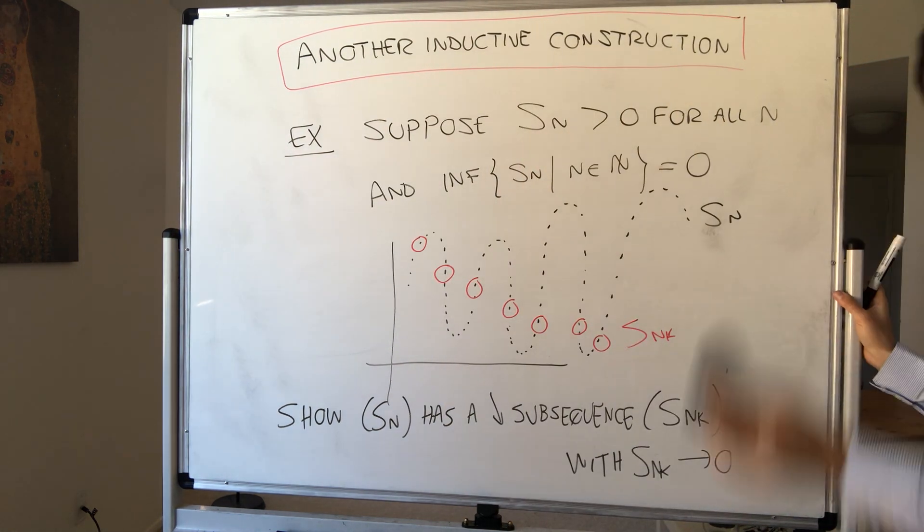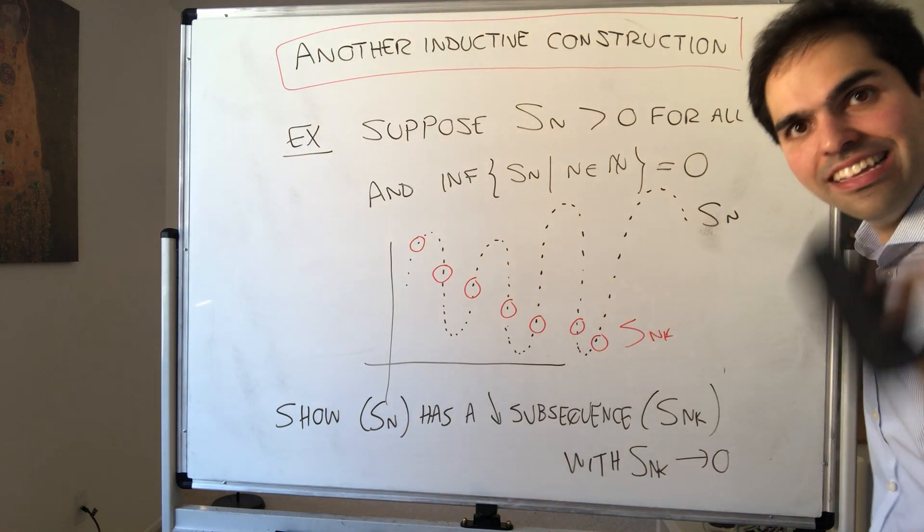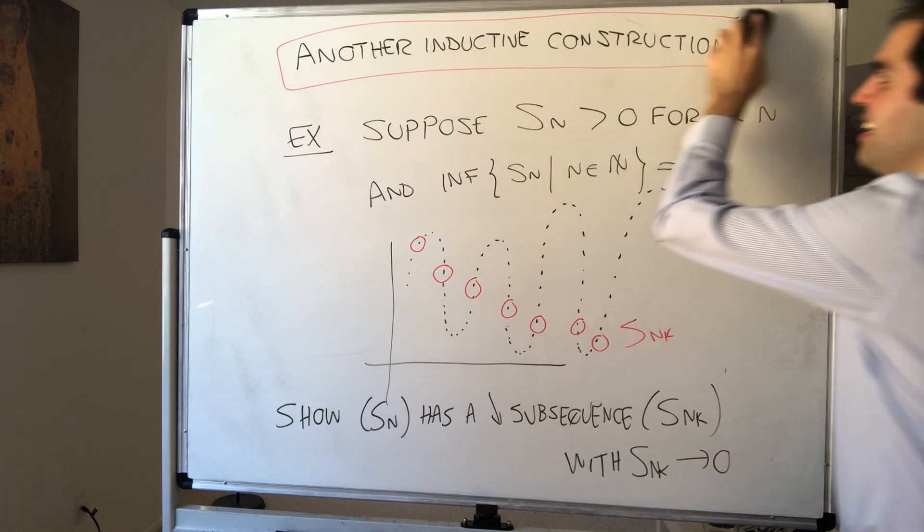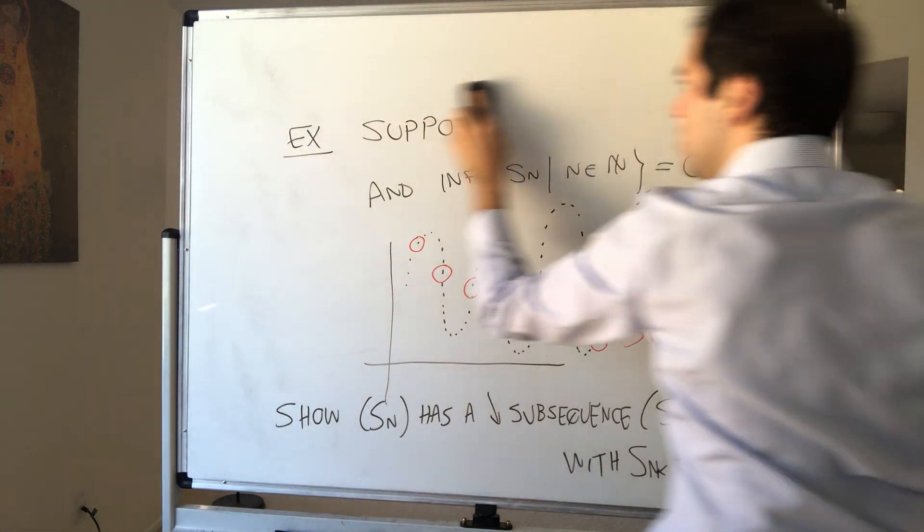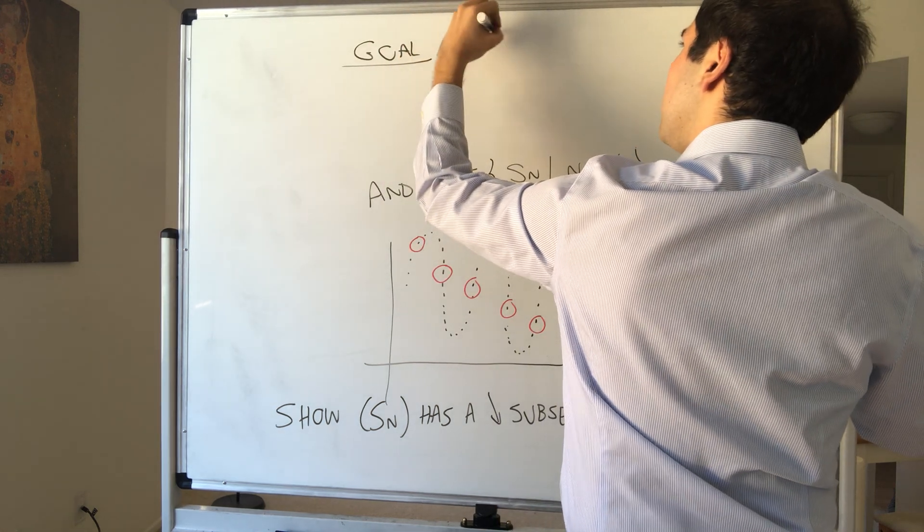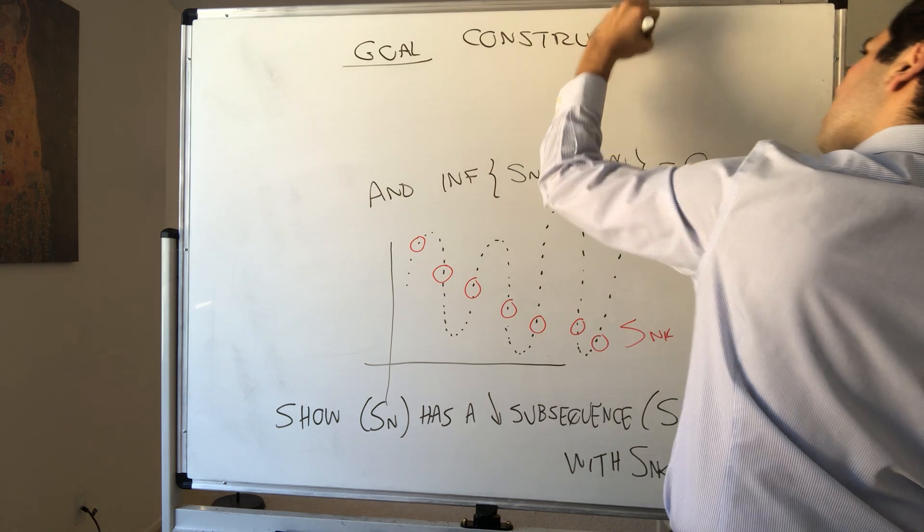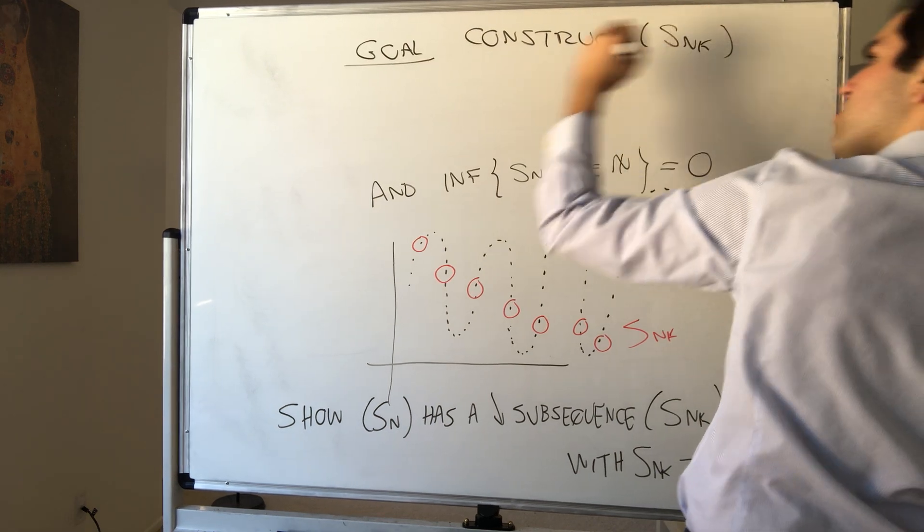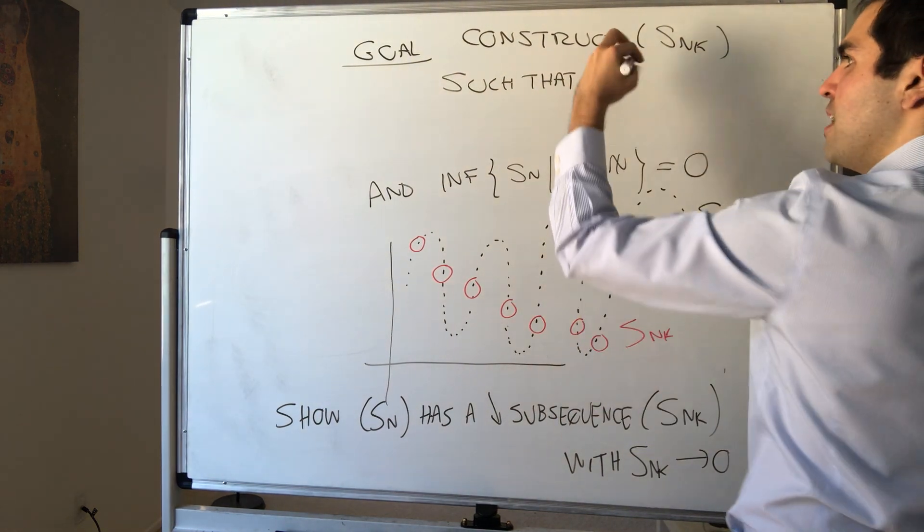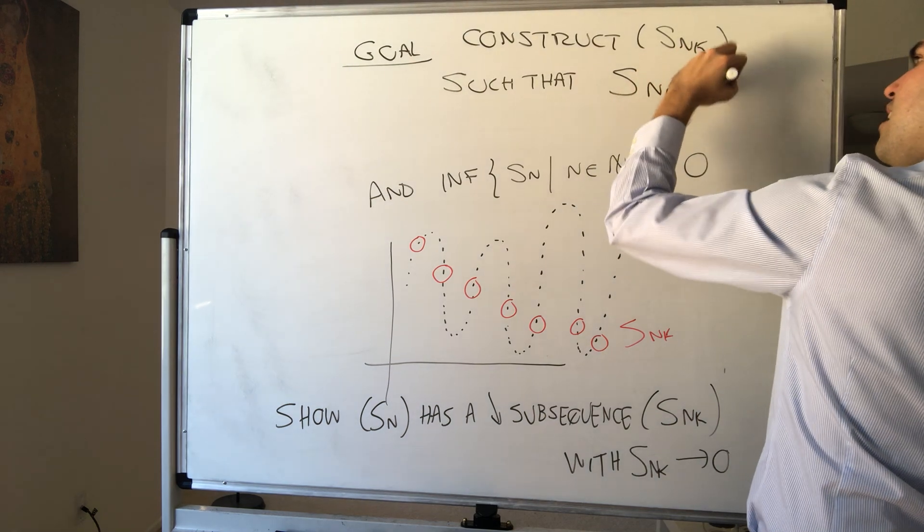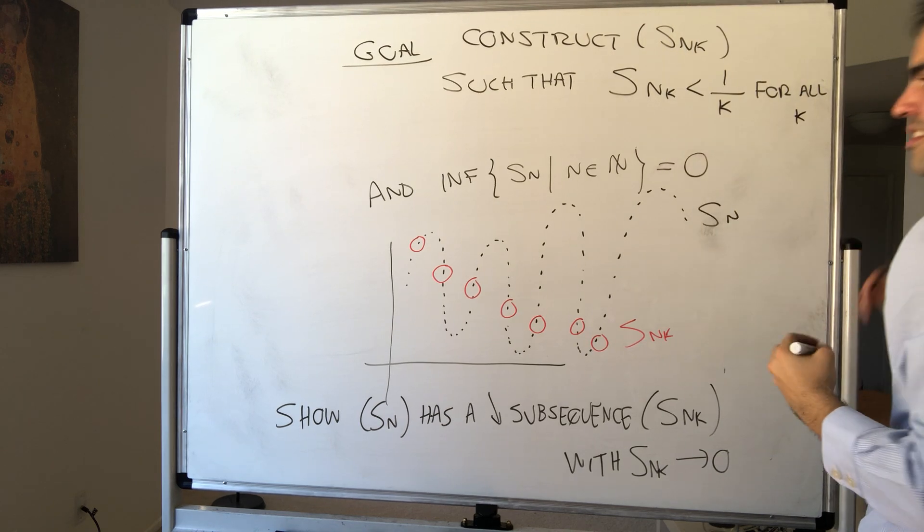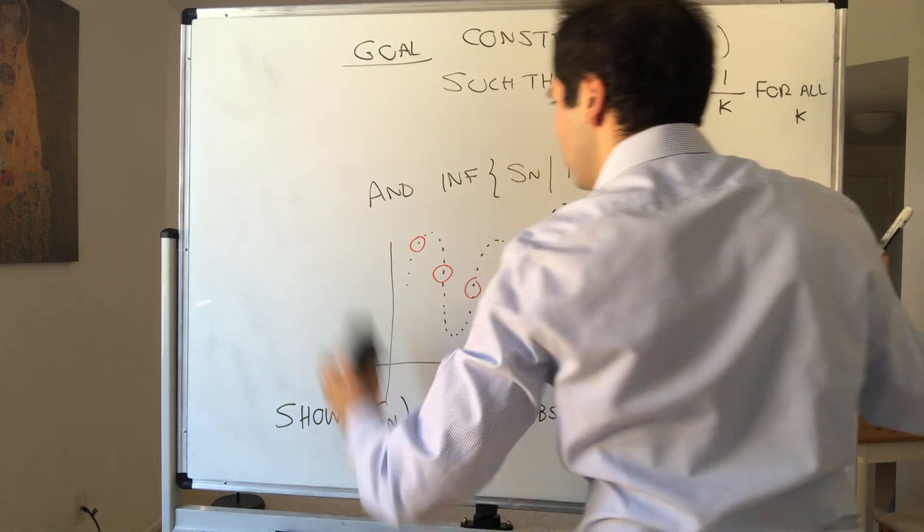And how do we do that? Again, we'll do it inductively, meaning we first define Sn1 and then given Snk, we'll define the next term. So here's our goal. What we want to do, we want to construct Snk such that, again this is positive by assumption, but we just want Snk less than 1 over k for all k. And of course, also that it's decreasing.